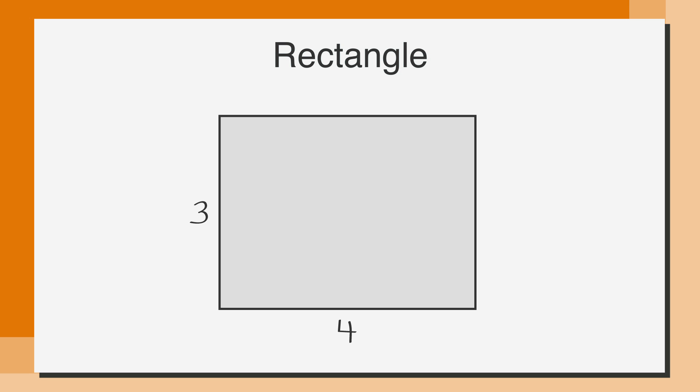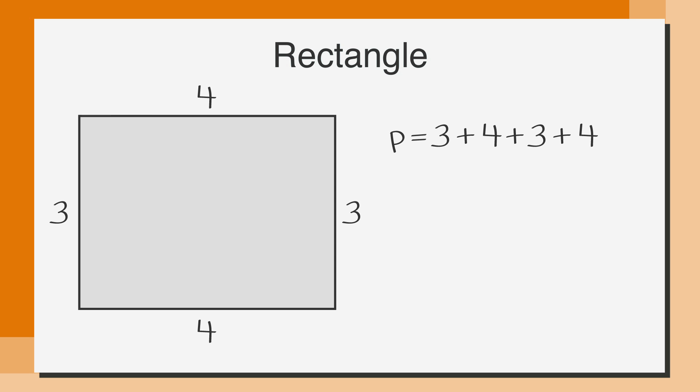And because rectangles have two sets of equal sides, we know that the other sides of the figure are also 3 and 4. So the equation for the perimeter of this rectangle is p equals 3 plus 4, plus 3 plus 4.